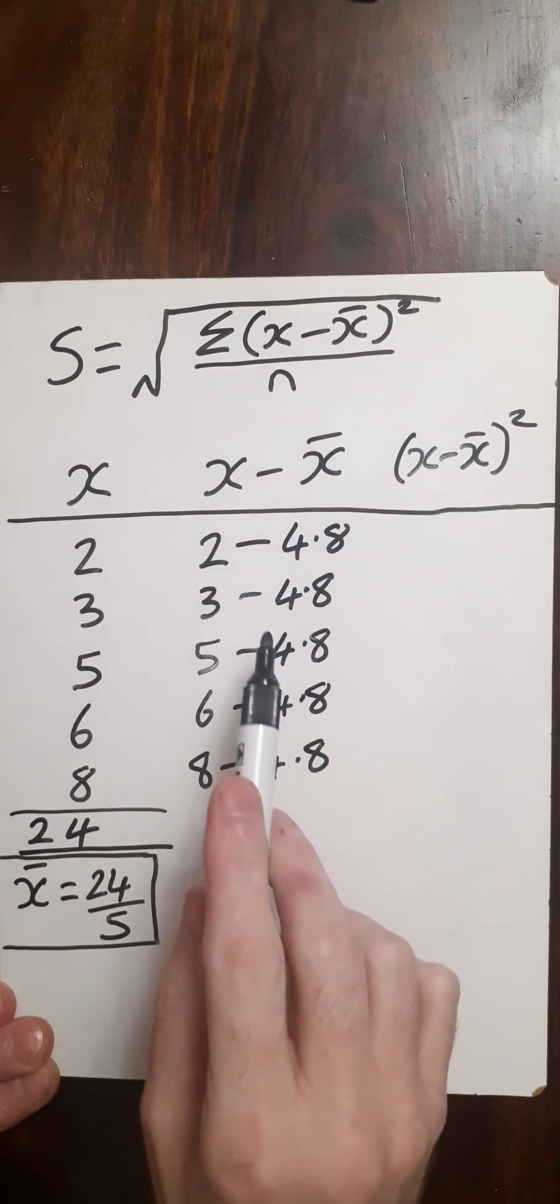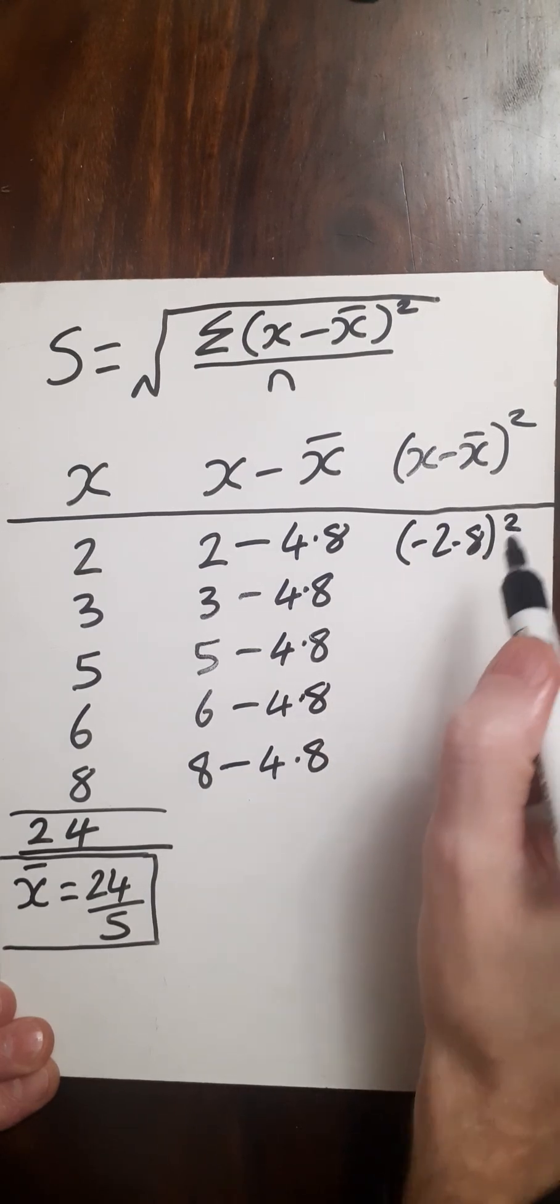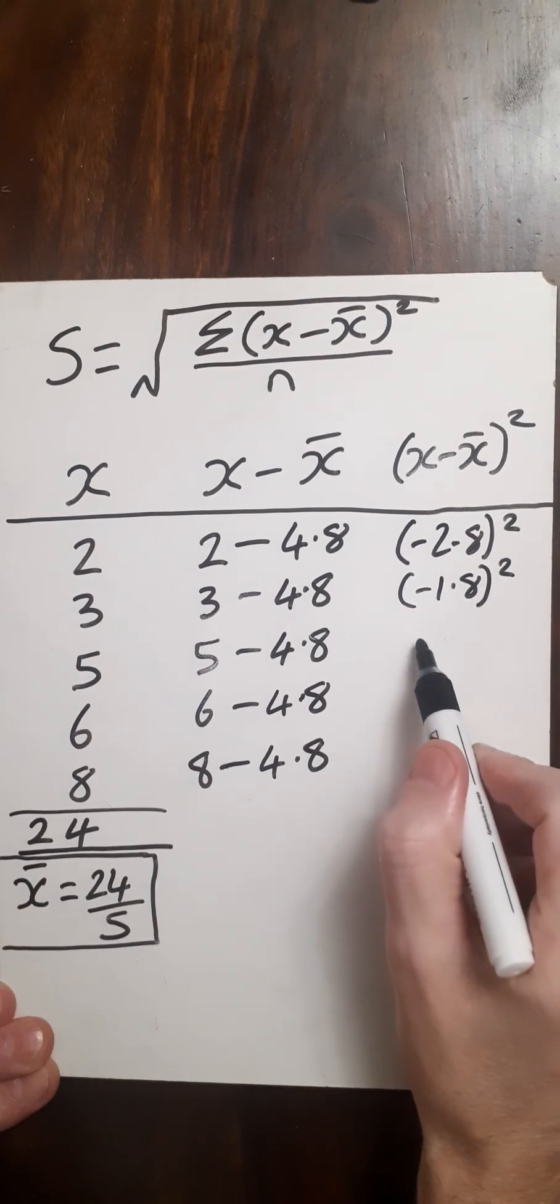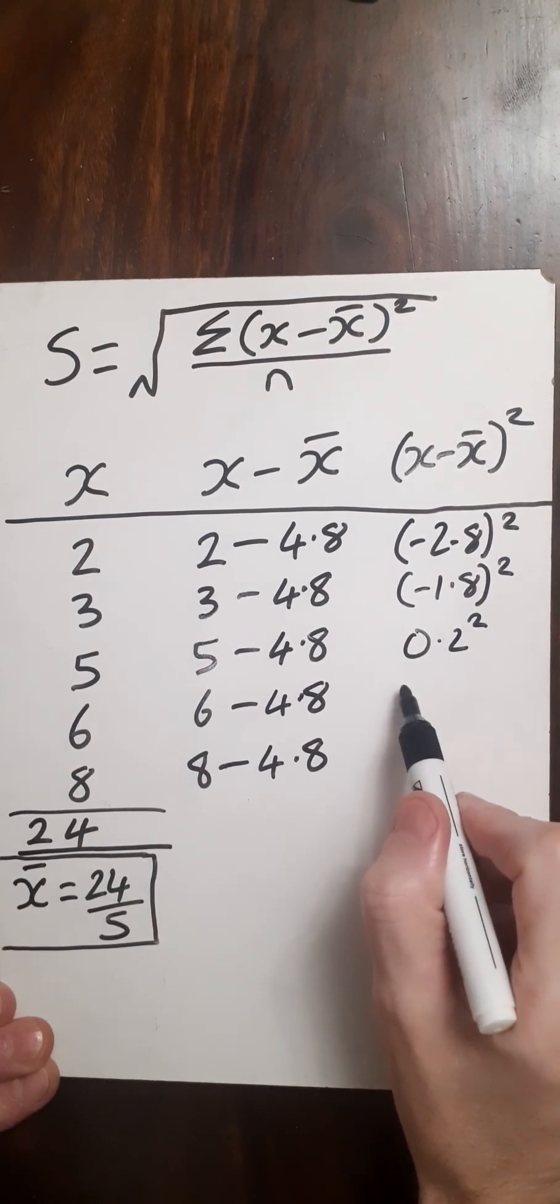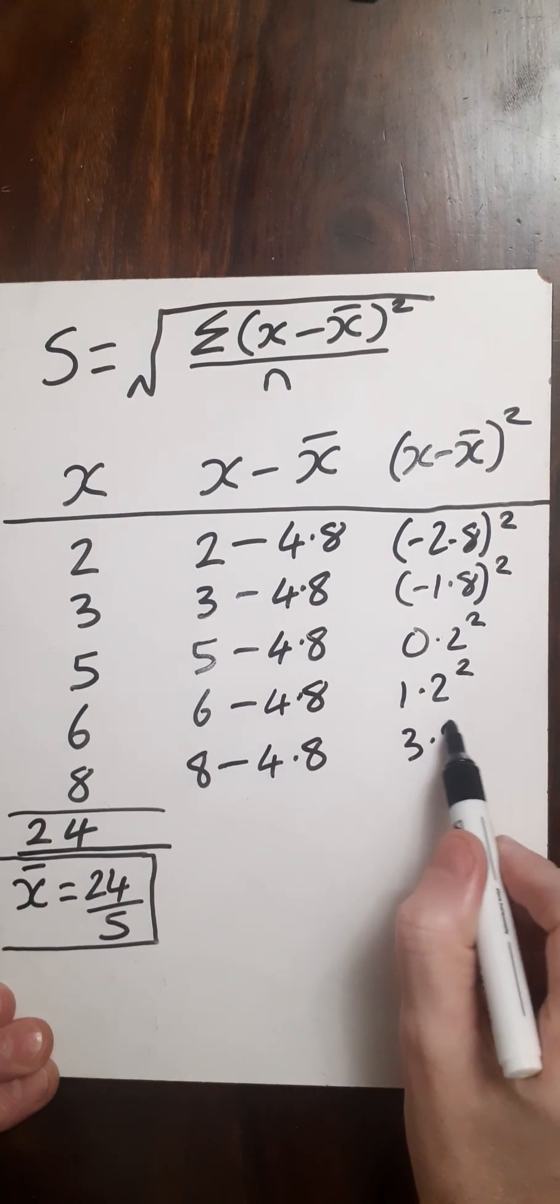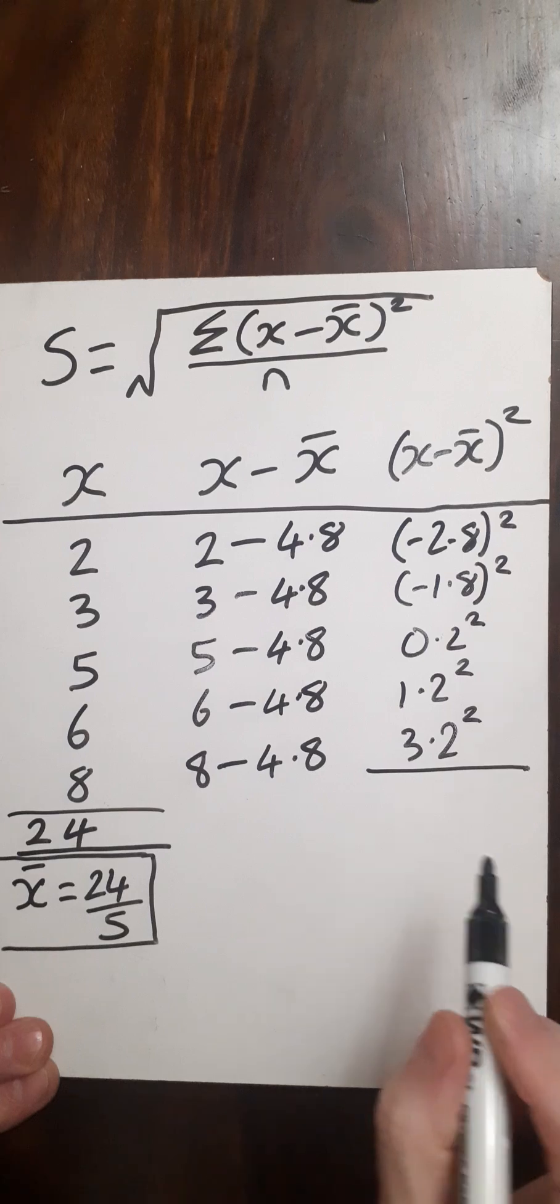So I've got 2 minus 4.8, which gives me minus 2.8 squared. This one will give me minus 1.8 squared. This one's 0.2 squared. This one here is 1.2 squared. And this one here is 3.2 squared. So now what I need to do is add all these up.